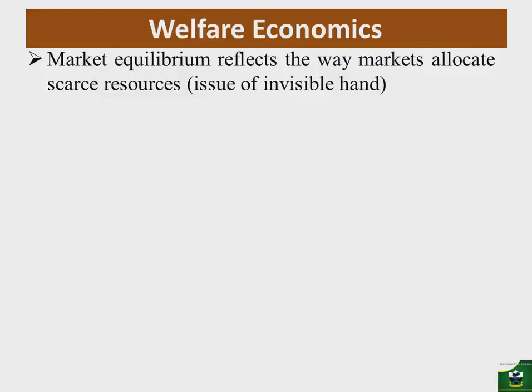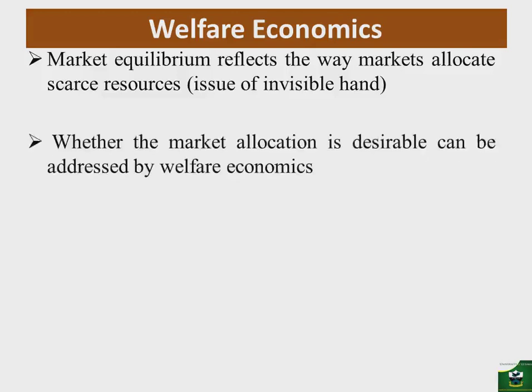In a market we make choices such as how many commodities we will get at a given price as consumers, or how many units we are going to supply at a given price as the firm, and we also decide what resources we will use in the production of certain commodities. Whether the market allocation is desirable or not can only be addressed by the issues of welfare economics.